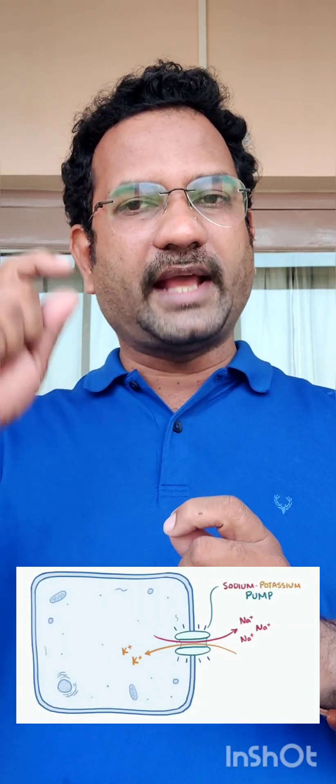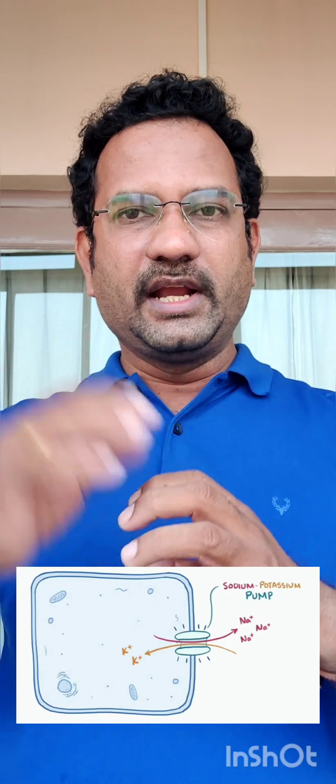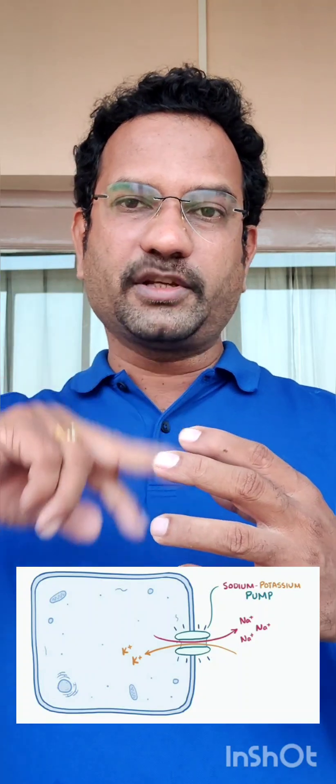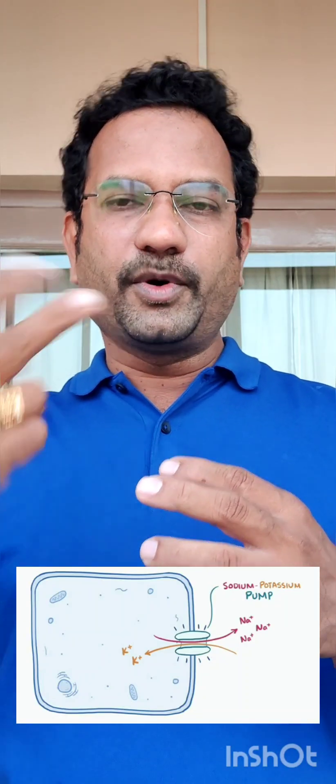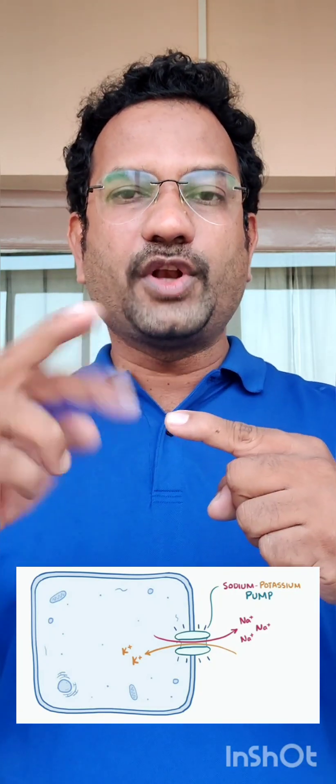Once depolarization happens, the cell will not remain in this state. It goes back to normal polarity by sending sodium outside the cell and taking potassium inside the cell. This is done with the help of a protein known as the sodium-potassium pump, which acts using ATP. The sodium-potassium pump sends three sodium ions to the outside and takes two potassium ions inside. So three positives go out and two potassium come in — the inside of the cell becomes negative again, returning to the normal polarization state. This is called repolarization.